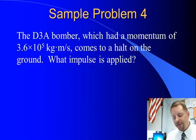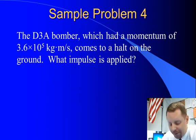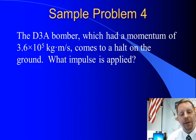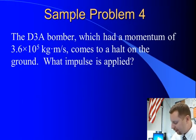Let's take a look and follow up with our D3 bomber problem. Our D3A bomber, which had a momentum of 3.6 times 10 to the fifth kilogram meters per second, comes to a halt on the ground. What impulse is applied?